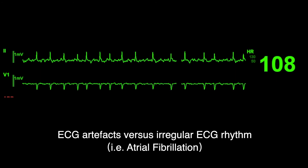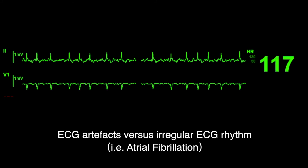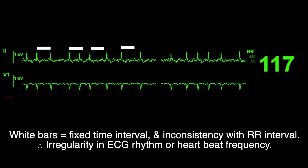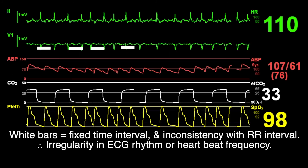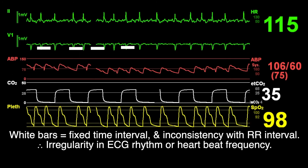For the purpose of designing higher fidelity parameters for simulation training, let's compare ECG artifacts and atrial fibrillations — an irregularly irregular ECG rhythm. The white color bars above the ECG rhythm represent a fixed time interval. In comparison to the RR interval of the ECG rhythm below, the RR intervals appear inconsistent.